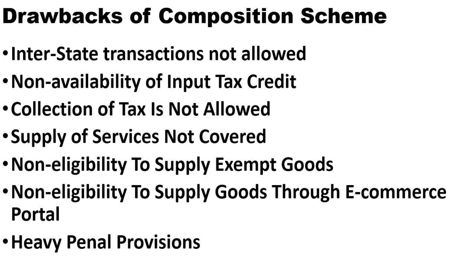Next are heavy penal provisions. There are many heavy penal provisions if you have opted into the composition scheme and you provide services which are not covered under Section 10, or if you are otherwise not eligible for the composition scheme. In all these conditions, small and medium enterprises face heavy penalties. If you make a mistake, you have to pay the full turnover amount as tax and also a penalty of 100% of the tax.